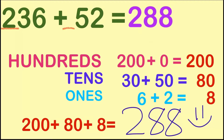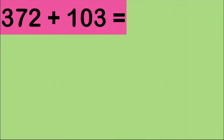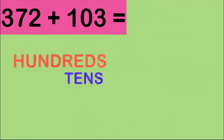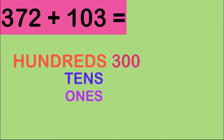Let's have our next example. How about if we have 372 plus 103? Again, in order to add using decompose strategy, you need to break up each number to its place value. Since this is a three-digit number, we are going to have hundreds, tens, and ones. Let's start at the hundreds place. Digit 3 is in the hundreds place, so the value of digit 3 is 300. Then on the second number, we have digit 1, and its value is 100. If we add 300 and 100, we will have 400.